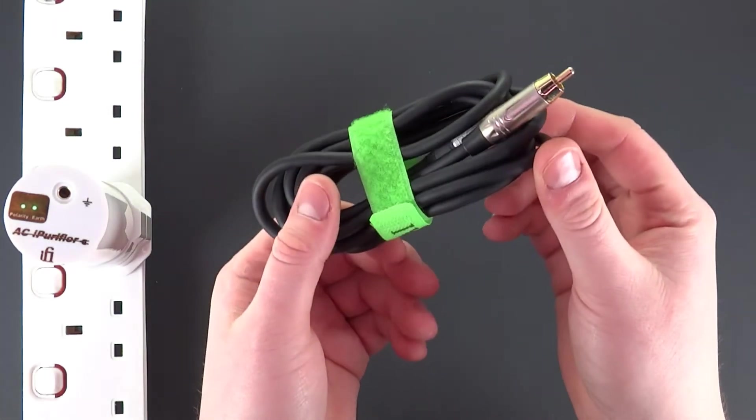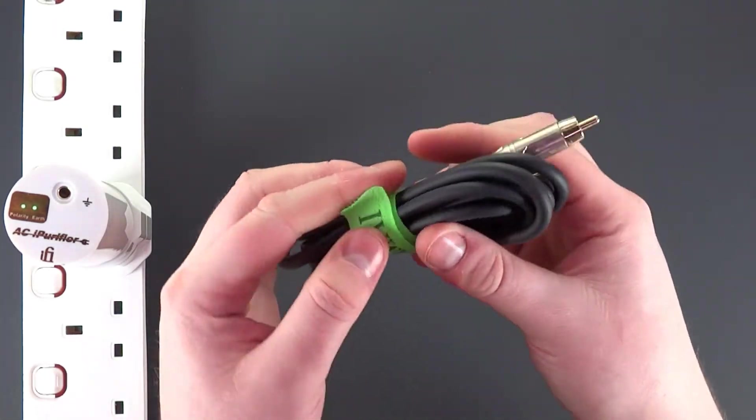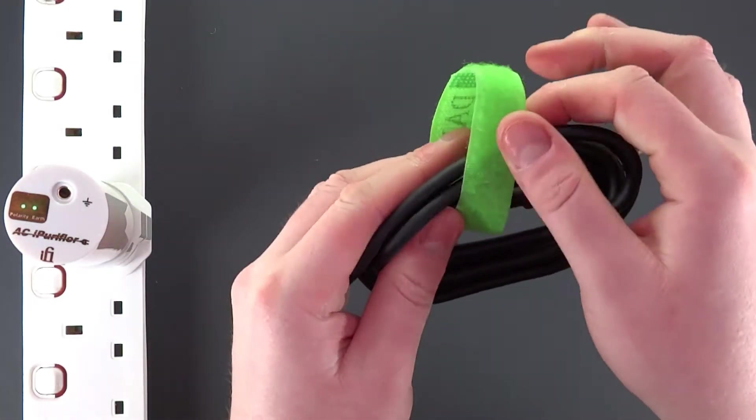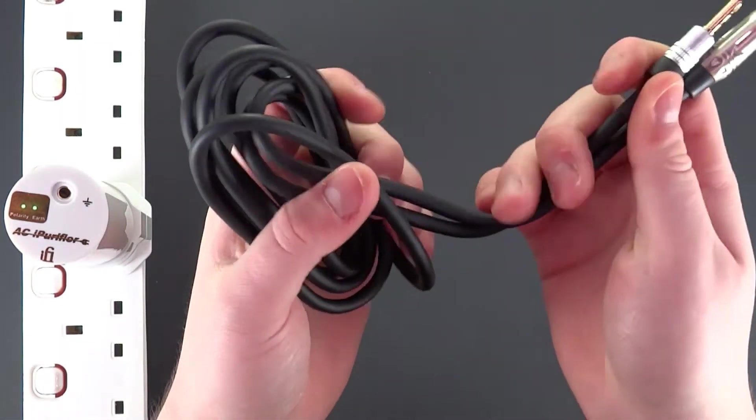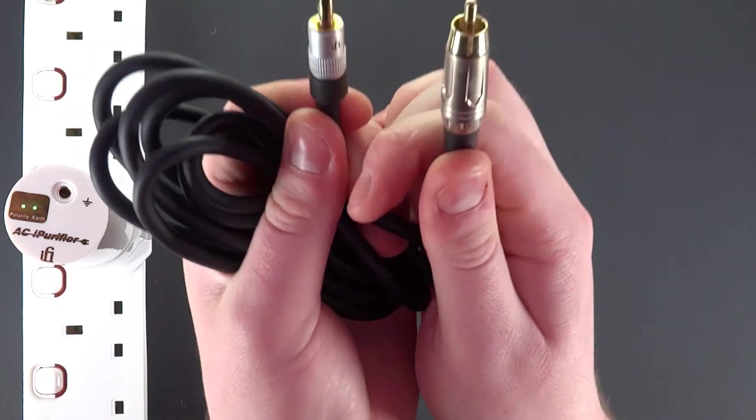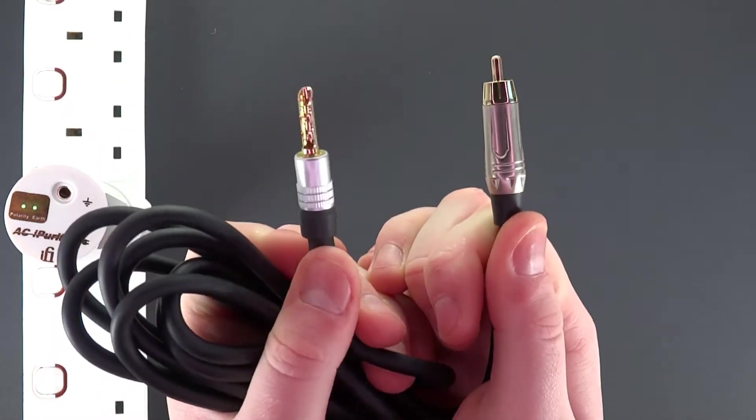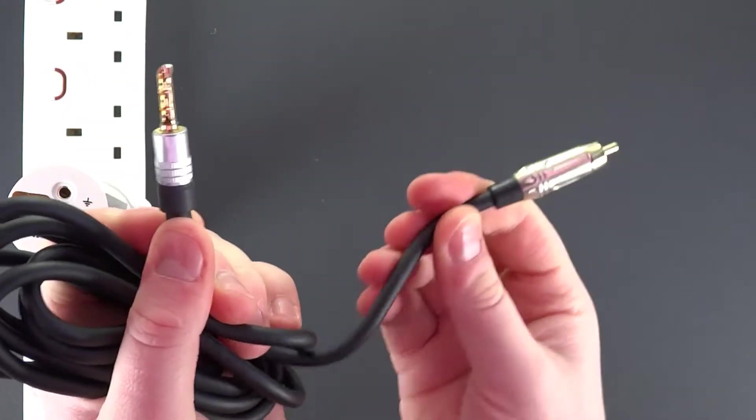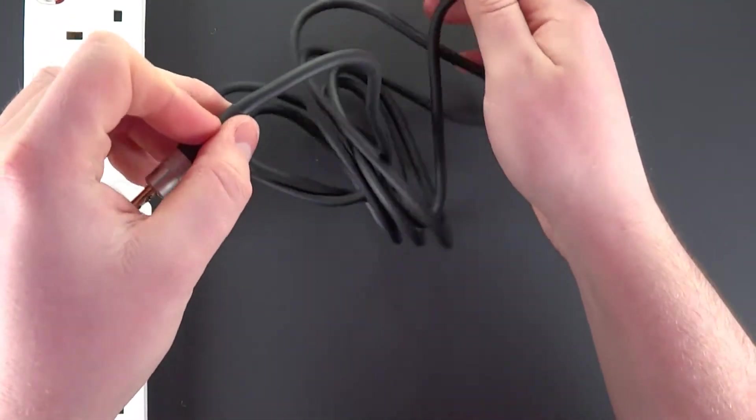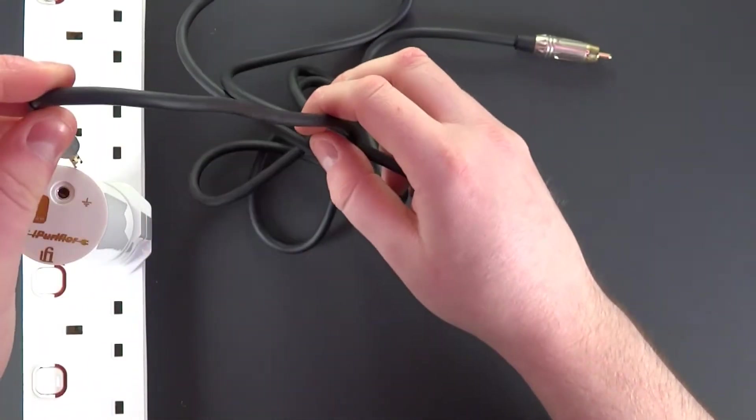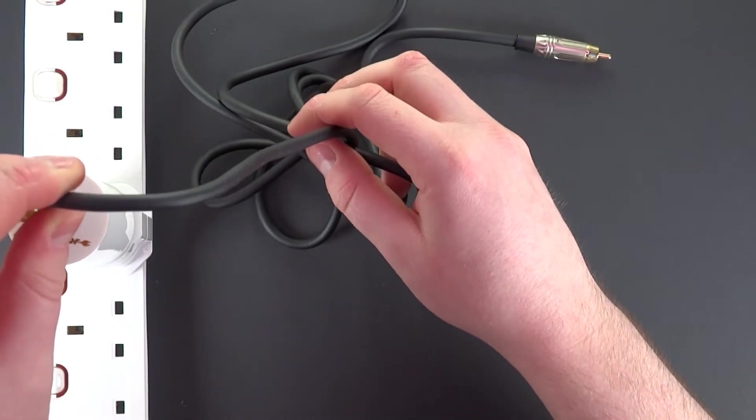Here is the 4.4 millimeter to male RCA. This particular cable is about 1.5 meters long and either direct to an unused RCA port. Connect it to the Ground symbol.